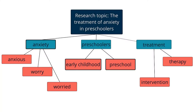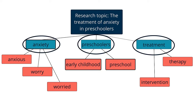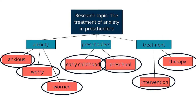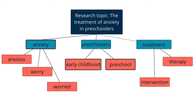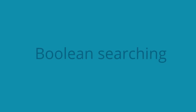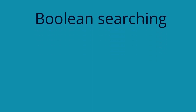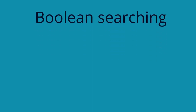When you brainstormed keywords based on your research topic, you should have identified the major concepts of that topic and multiple keywords that could be used to describe those concepts. You'll start with this list as you develop your search statement. In order to turn our keywords into a search statement, we're going to use something called Boolean searching.